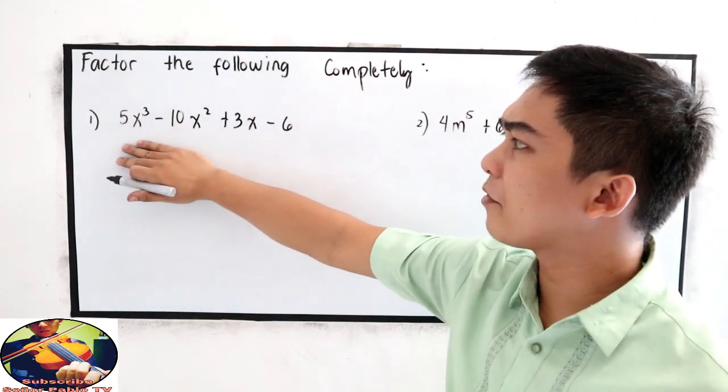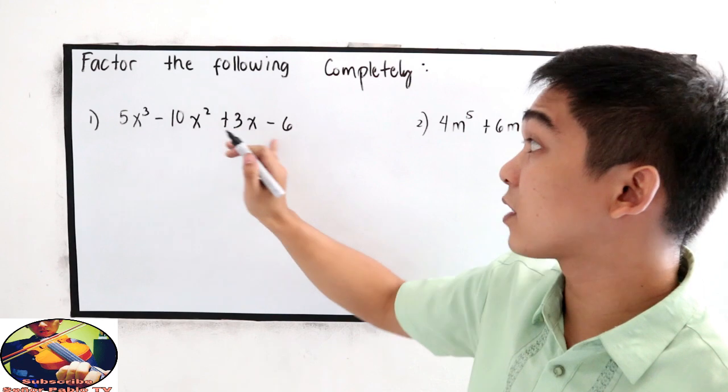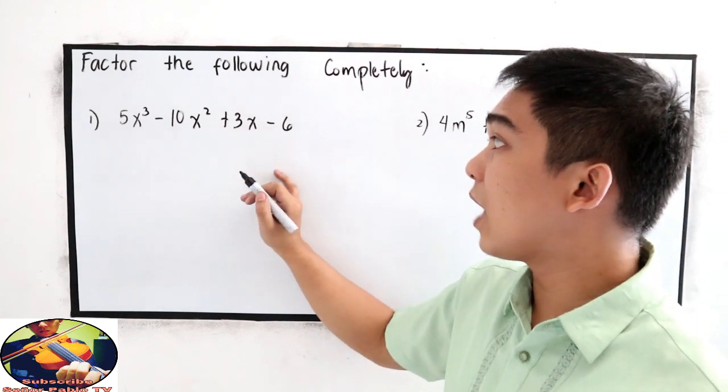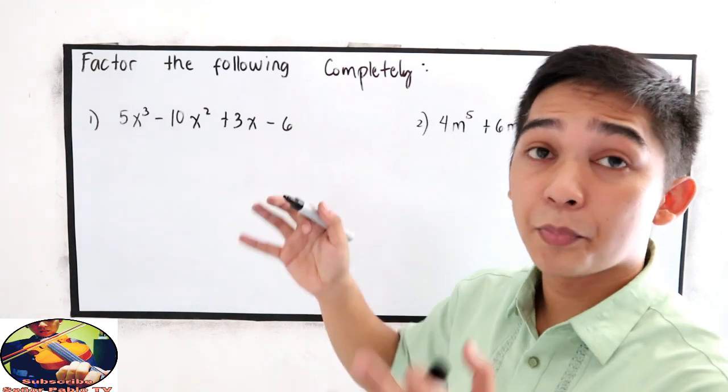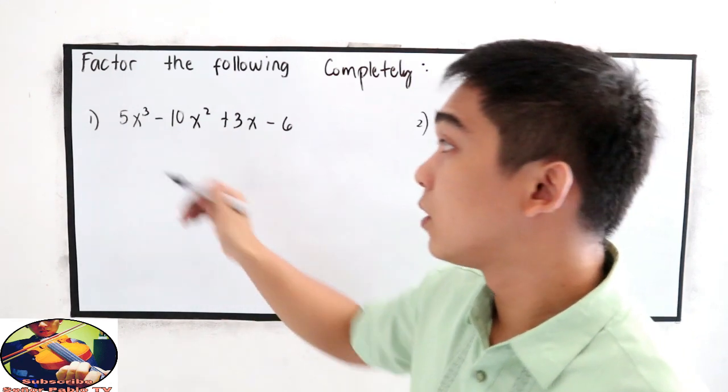Number 1, 5x cubed minus 10x squared plus 3x minus 6. Now, let us group the expression first.